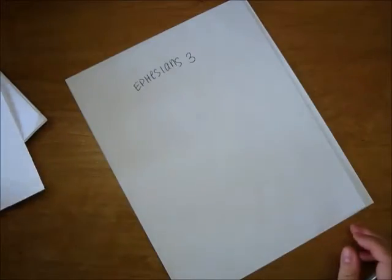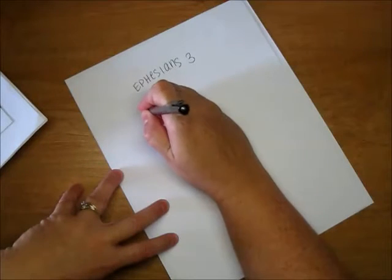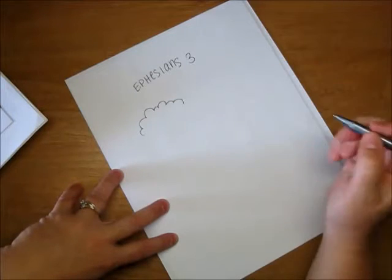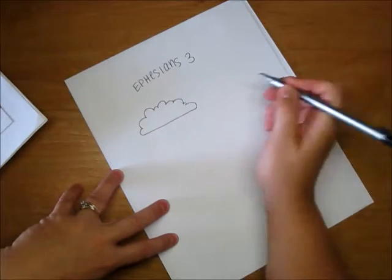Okay, Ephesians 3. All right, for this one we start out with a cloud and a cloud is basically just bumps. You can do big and little bumps. This cloud is going to have a flat bottom, or you could do a cloud that's got bumps all around.